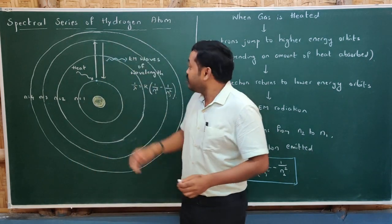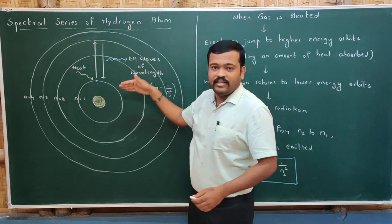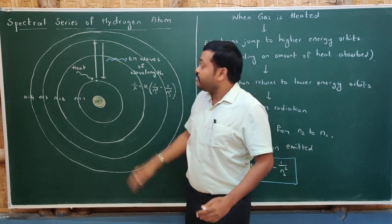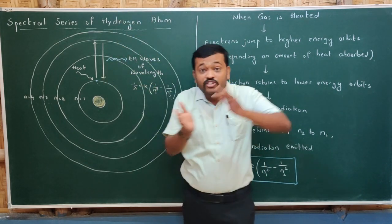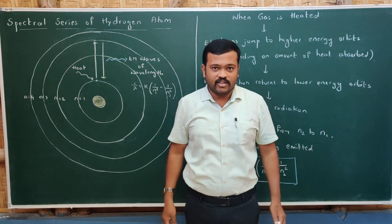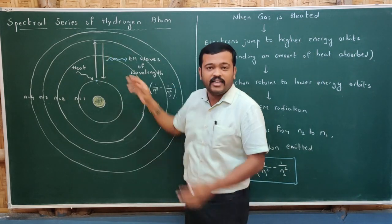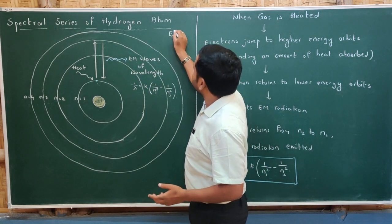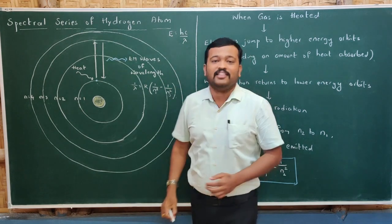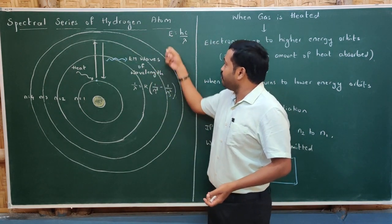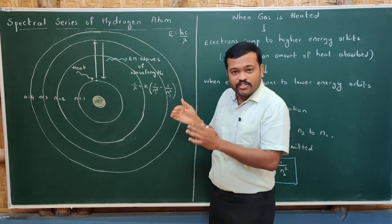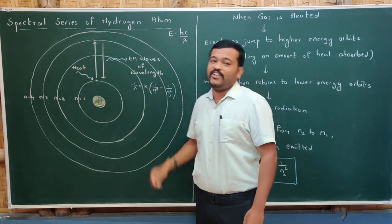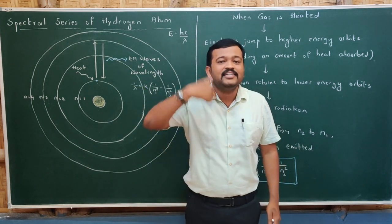One important concept: if the transition is large — coming from a higher energy level to a lower one — then the energy of the radiation emitted will also be large. If the transition is small, the energy will be small. But energy is inversely proportional to wavelength: higher the transition, lower the wavelength; lower the transition, higher the wavelength.